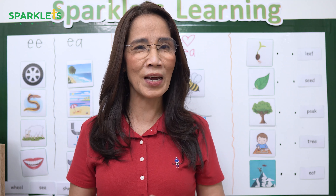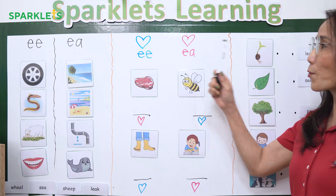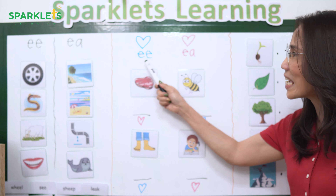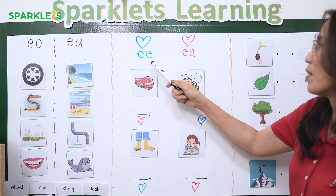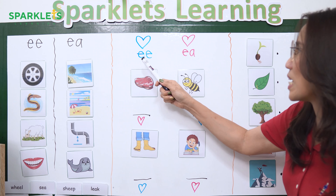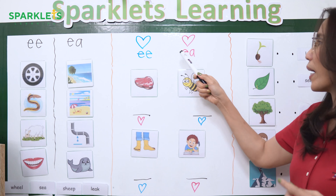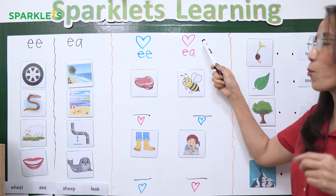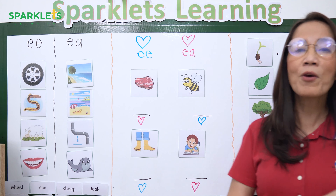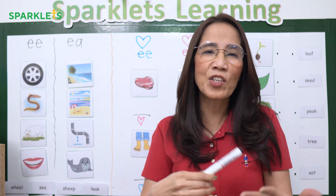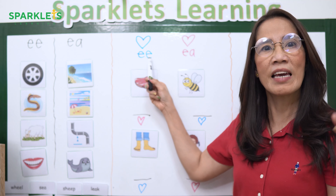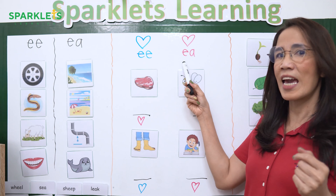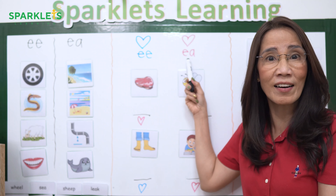Here is the fun part — the integration of Heart Word Magic. Represent EE and EA with two colored hearts. Let's say we represent EE with a blue heart and EA with a red heart. You are going to make the children remember that EE is a blue heart and EA is a red heart.